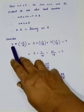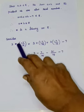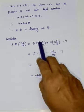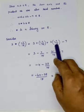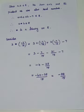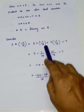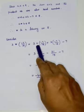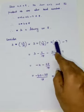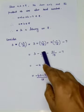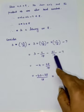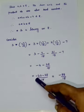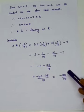Now find 3 asterisk (minus 7/15). Substituting a equals 3 and b equals minus 7/15 into the definition: 3 plus (minus 7/15) plus 3 times (minus 7/15) minus 7. This gives 3 minus 7/15 plus (minus 21/15) minus 7. Simplifying: 3 minus 7 is minus 4, minus 7/15 minus 21/15 is minus 28/15. Taking LCM: minus 60/15 minus 28/15 equals minus 88/15, simplifying to minus 8 by 15.